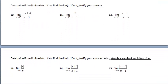We're determining if the limit exists, if so find the limit, if not justify your answer. For number 10, the first thing we're going to do is try direct substitution — that is, plug 3 in, even though we're approaching 3 from the right side. That would be negative 3 plus 4, all over 3 minus 3. The result is 1 over 0. We know that's going to be a does not exist because that's a vertical asymptote.